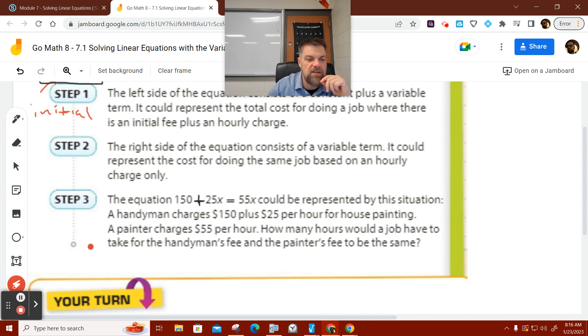Back to the words. It says the equation 150 plus 25x equals 55x could represent this, could be represented by this situation. The handyman charges 150 plus $25 per hour for house painting. A painter charges $55 per hour. How many hours would the job have to be to take the handyman's fee over the painter's fee to be the same?